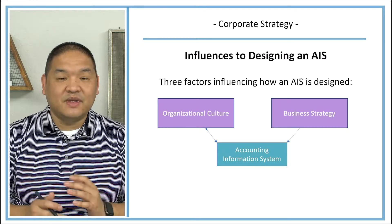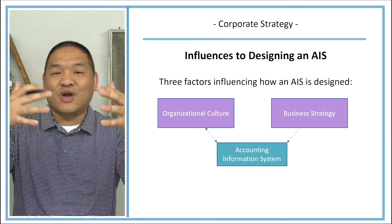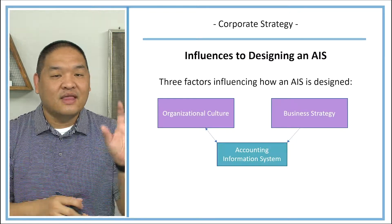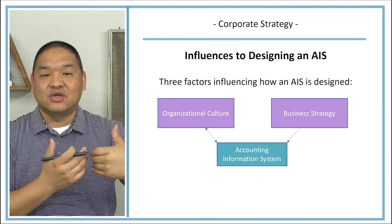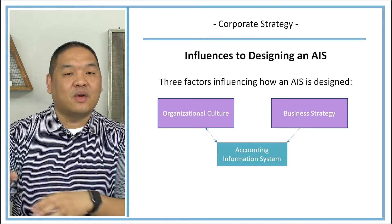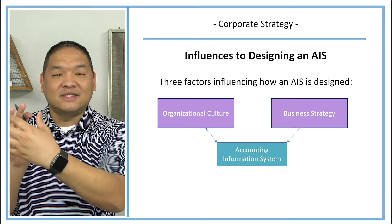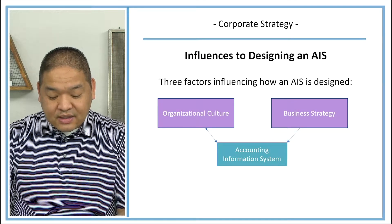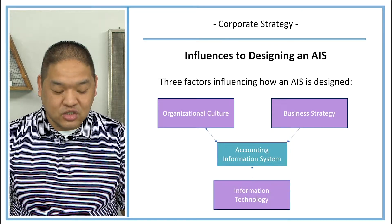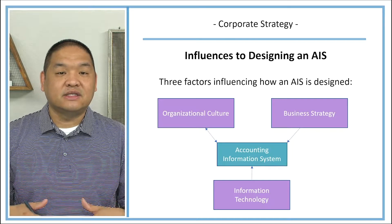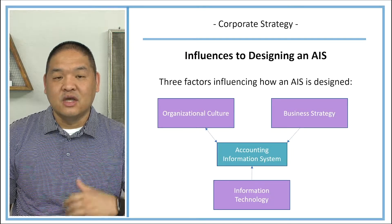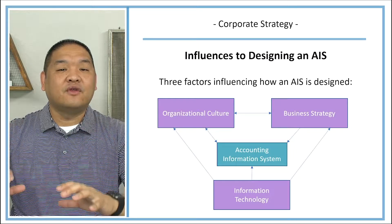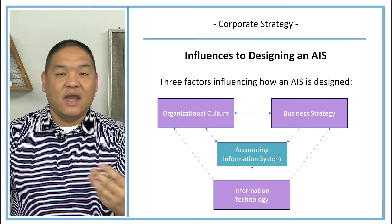Another influence affecting an AIS system is business strategy. Their strategy may have been door-to-door sales, which requires gathering information differently than digital marketing, where everything comes into a digital platform and you instantly have customer information. With door-to-door, you ask more of the customer and document it manually, whereas digitally a customer fills out a form and you have all the information you need. A third influence is information technology, which allows us to effectively and efficiently process data into information to make decisions more quickly. All three factors work together, influencing how an AIS is implemented and designed within an organization.